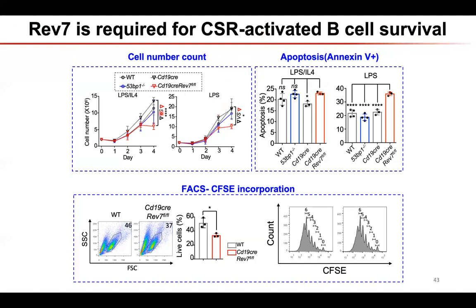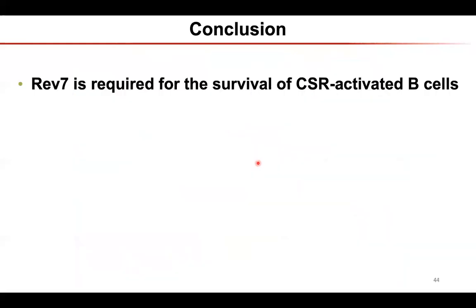My student noticed that whenever he made conditional knockout of REV7 in B cells, the B cells always die at day 4, regardless of whether you stimulate with LPS or LPS plus IL-4. He checked how the cells died — a significant part undergo apoptosis. Interestingly, when checking cell proliferation counting only live cells, there's not much defect. This specific cell death phenotype was never seen before for other gene-deficient B cells — it appears REV7 is required for active B cell survival.